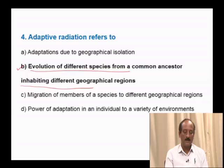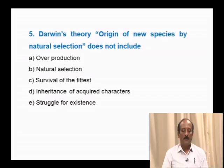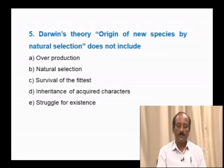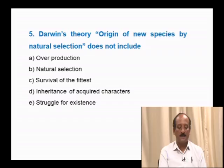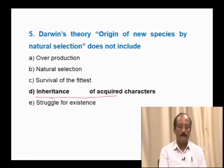Question number 5: Darwin's theory on the origin of new species by natural selection does not include — overproduction, natural selection, survival of the fittest, inheritance of acquired characters, struggle for existence. According to Darwinism, he explained overproduction, natural selection, survival of the fittest, and struggle for existence. But the inheritance of acquired characters was proposed by Lamarck. The correct answer is inheritance of acquired characters.